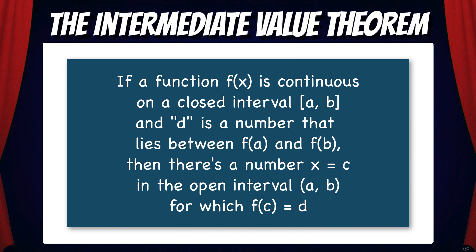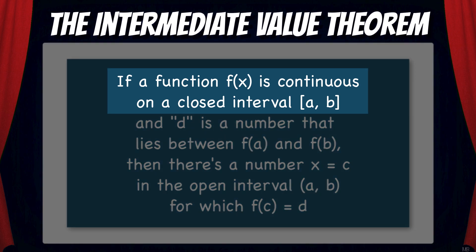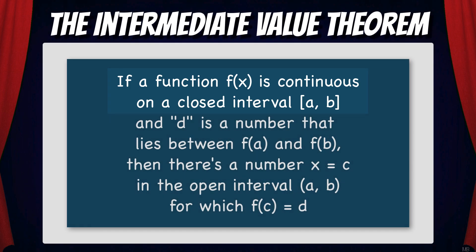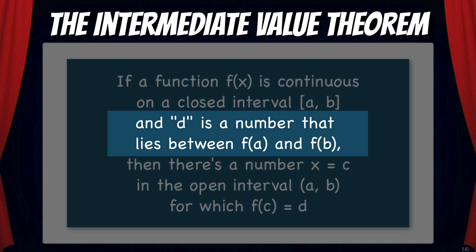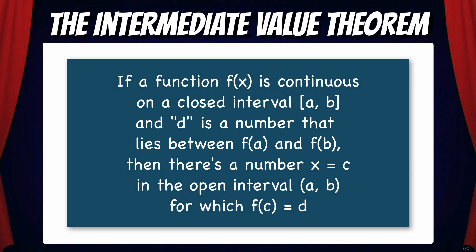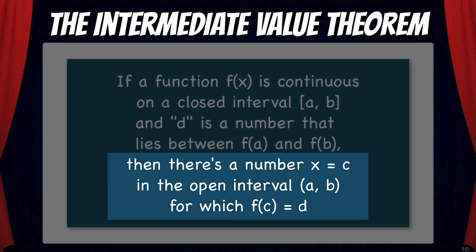So this brings us to the Intermediate Value Theorem, which says: if a function f is continuous on a closed interval a to b, and d is a number that lies between f(a) and f(b), then there's a number x equals c in the open interval a to b for which f(c) equals d.